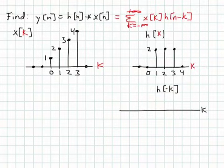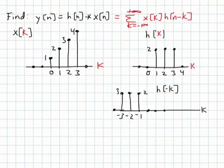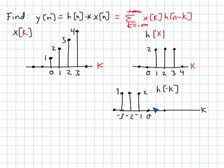h of minus k is a function of k, but now it's time-reversed so everything flips across the y axis. At 0 it'll be 0, at minus 1 it'll be 2, minus 2 it'll be 2, minus 3 it'll be 2, and it's 0 everywhere else. So this is h of k flipped across the y axis to give h of minus k.